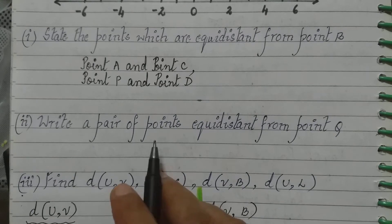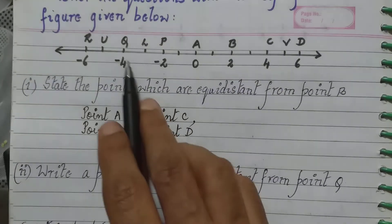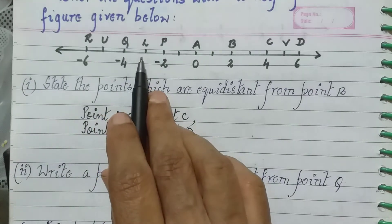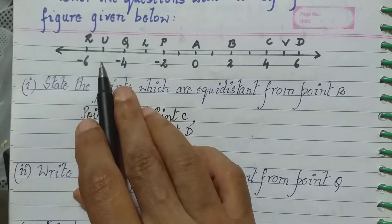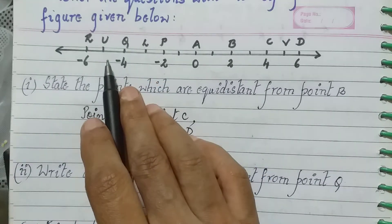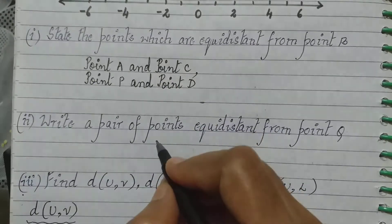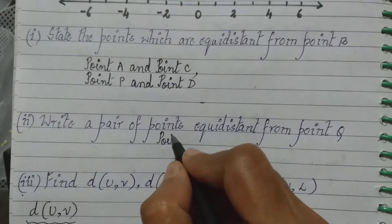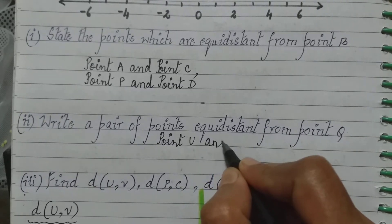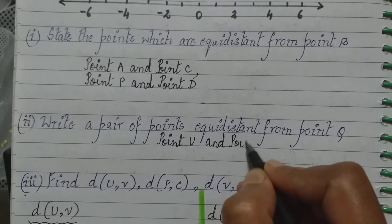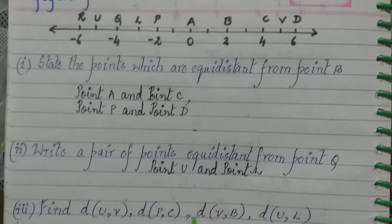Next: write a pair of points equidistant from point Q. Next to Q on the right we have L, and on the left we have U — both are at a distance of one unit. So we can say point U and point L are equidistant from point Q.